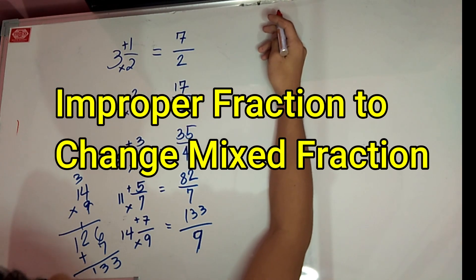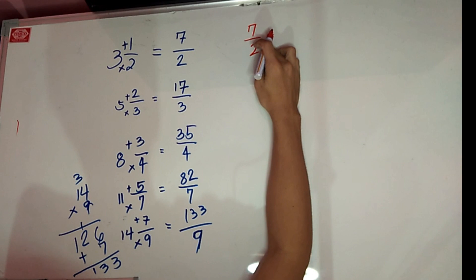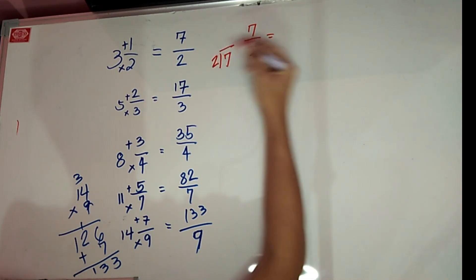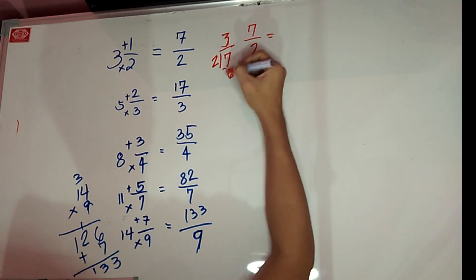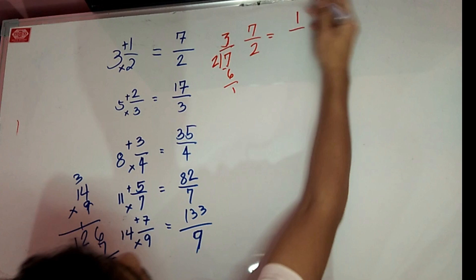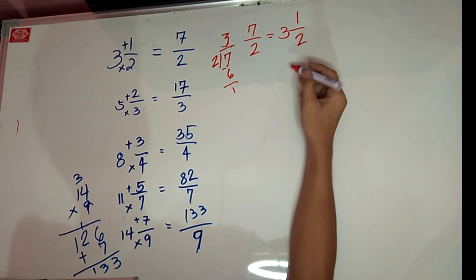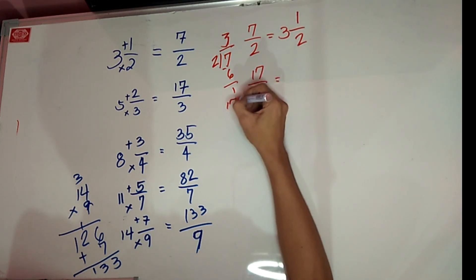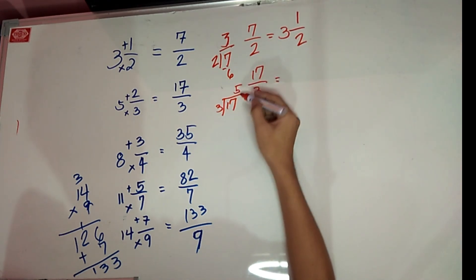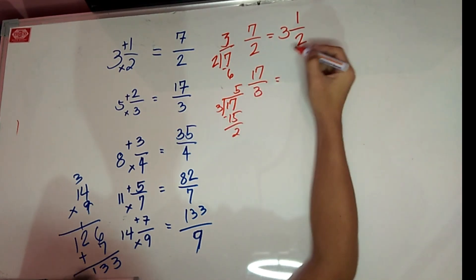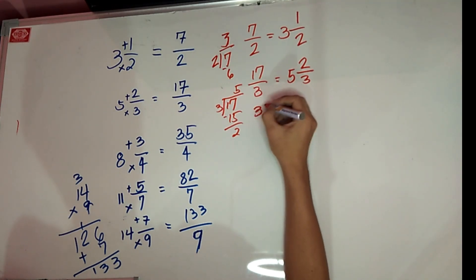Now let's go to changing improper fraction to mixed fraction. Just simply divide. For example, 19 over 3: 3 goes into 19 six times — remainder one. So your remainder is your numerator, your divisor is your denominator, your quotient is your whole number. Next, 17 over 3: divide 17 by 3, that is 5 remainder 2 — so 5 and 2 thirds.